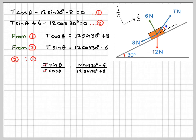The T's will cancel out. Now sine over cos is equal to tan theta. And we can't cancel out the 12 here because it's not actually a common factor. So cos of 30 is root 3 over 2, so it becomes 6 root 3 minus 6. Otherwise, just work it out on your calculator. And then 12 sine 30 is 12 times a half, which is going to be 6 plus 8, which is 14.